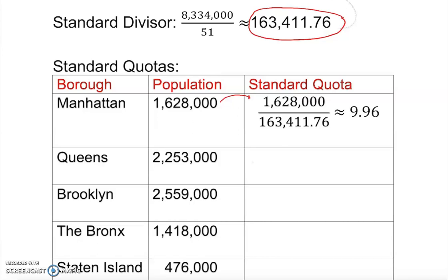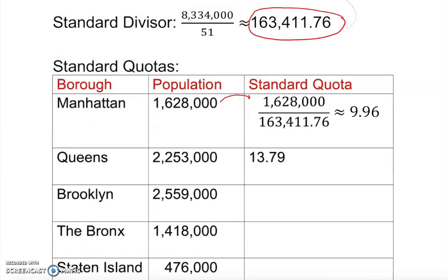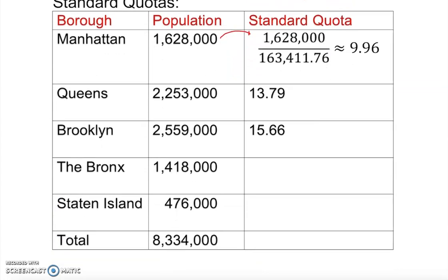For the next borough that gives 13.79, and the following one gives 15.66. Then 1,418,000 divided by 163,411.76 gives 8.68, and the last borough gives 2.91. These are the standard quotas for each borough. If you add all of them up, the total should be 51.